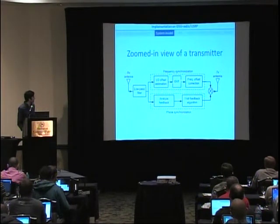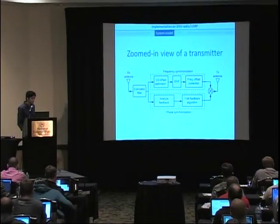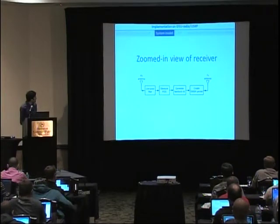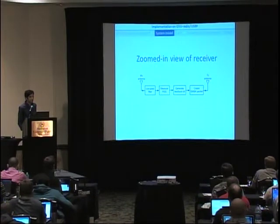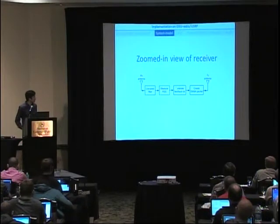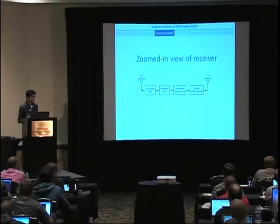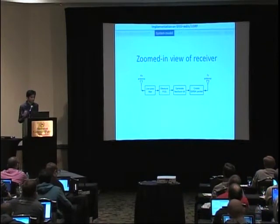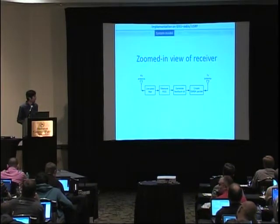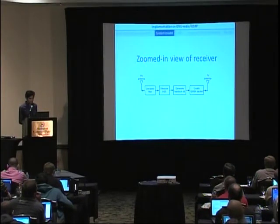The top part performs frequency synchronization of this transmitter with respect to the receiver. At the receiver side, the receiver simply averages the signal strength over some duration and computes a single bit of feedback: one if the signal strength has increased compared to the previous iteration, zero otherwise. Once the feedback bit is generated, it is packetized and sent.